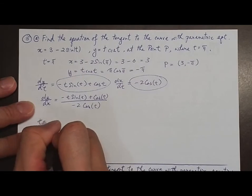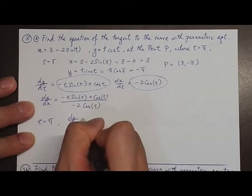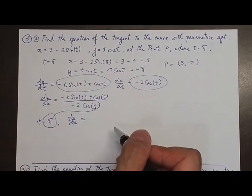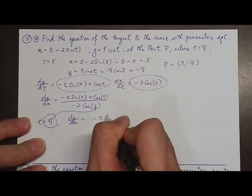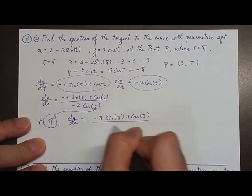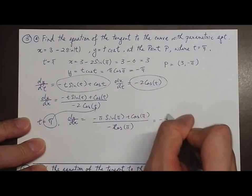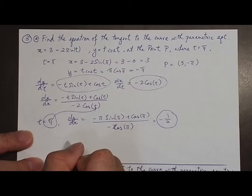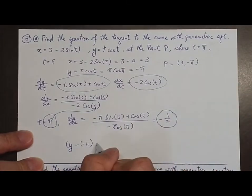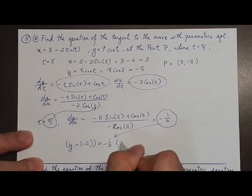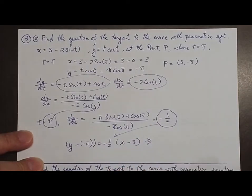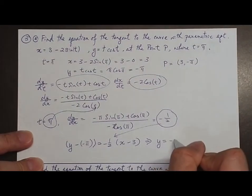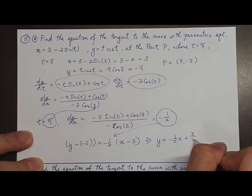When t equals π, dy/dx equals (minus π sin π plus cos π) over (minus 2 cos π), which equals minus 1/2. This is the slope when t equals π. By the point-slope form, y minus (−π) equals minus 1/2 multiplied by (x minus 3). So the equation of the tangent is y equals minus (1/2)x plus 3/2 minus π.